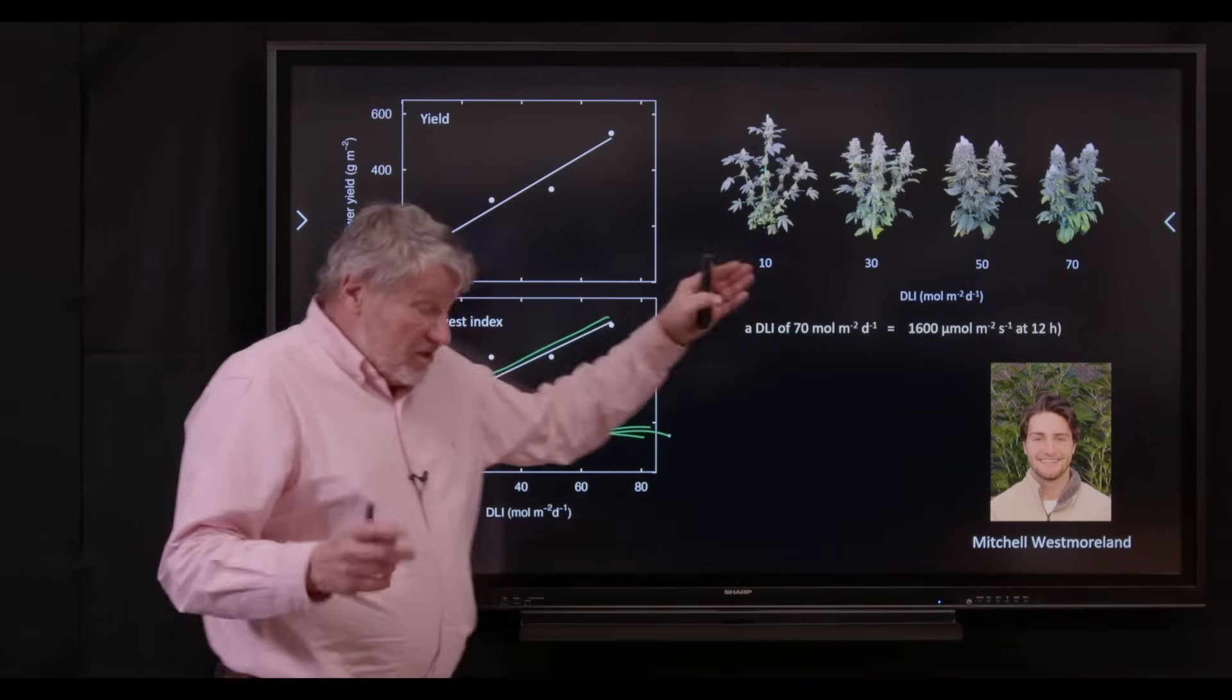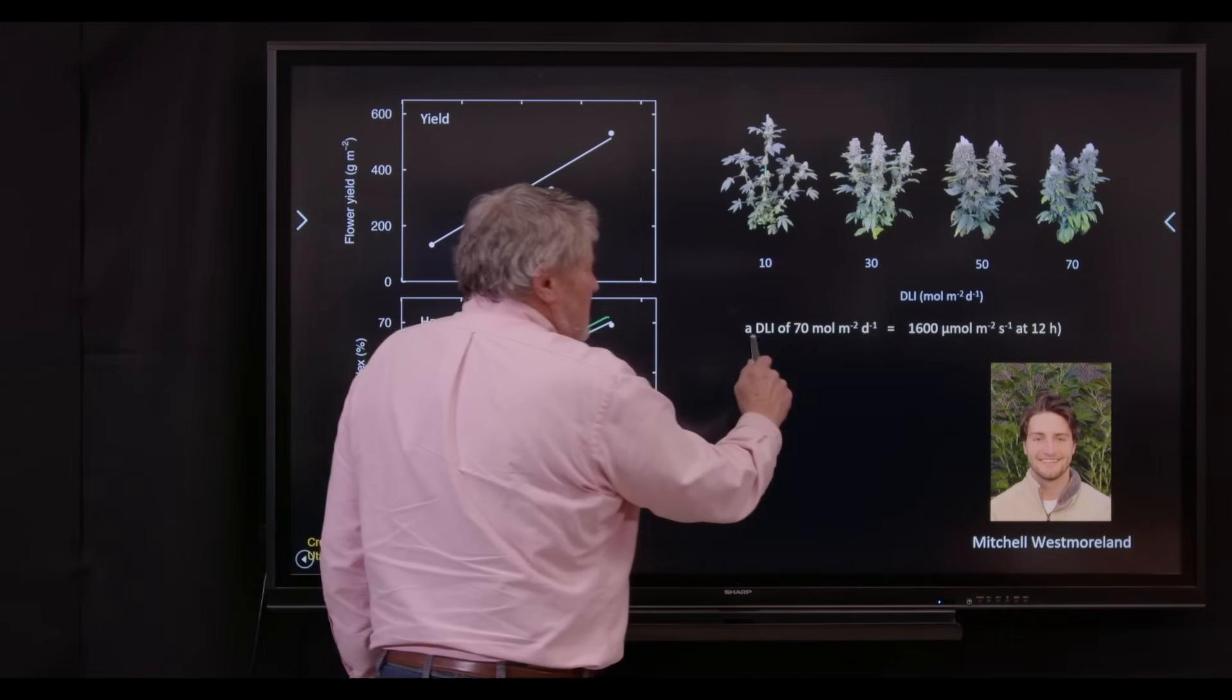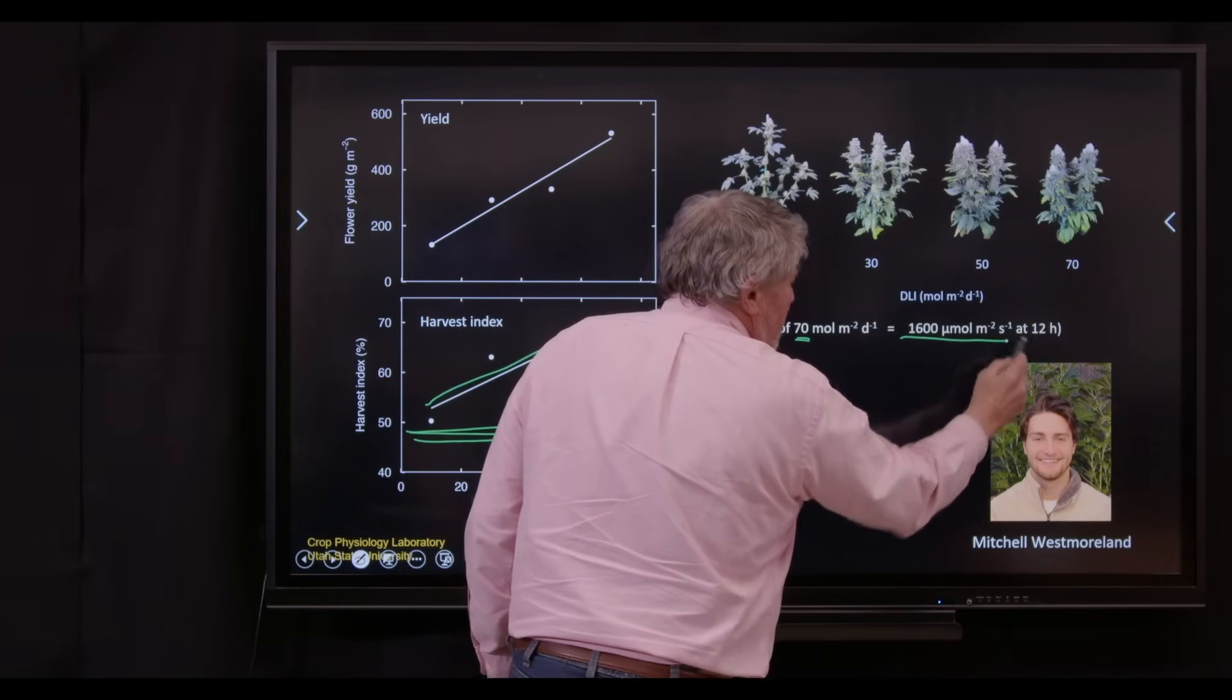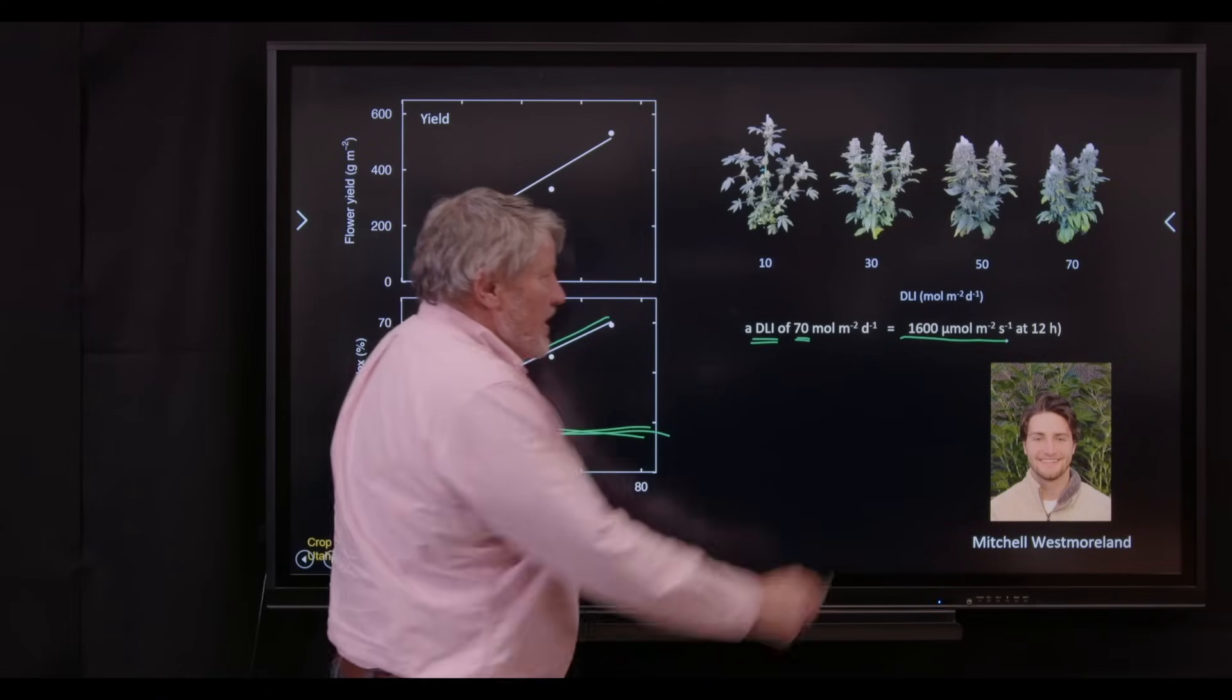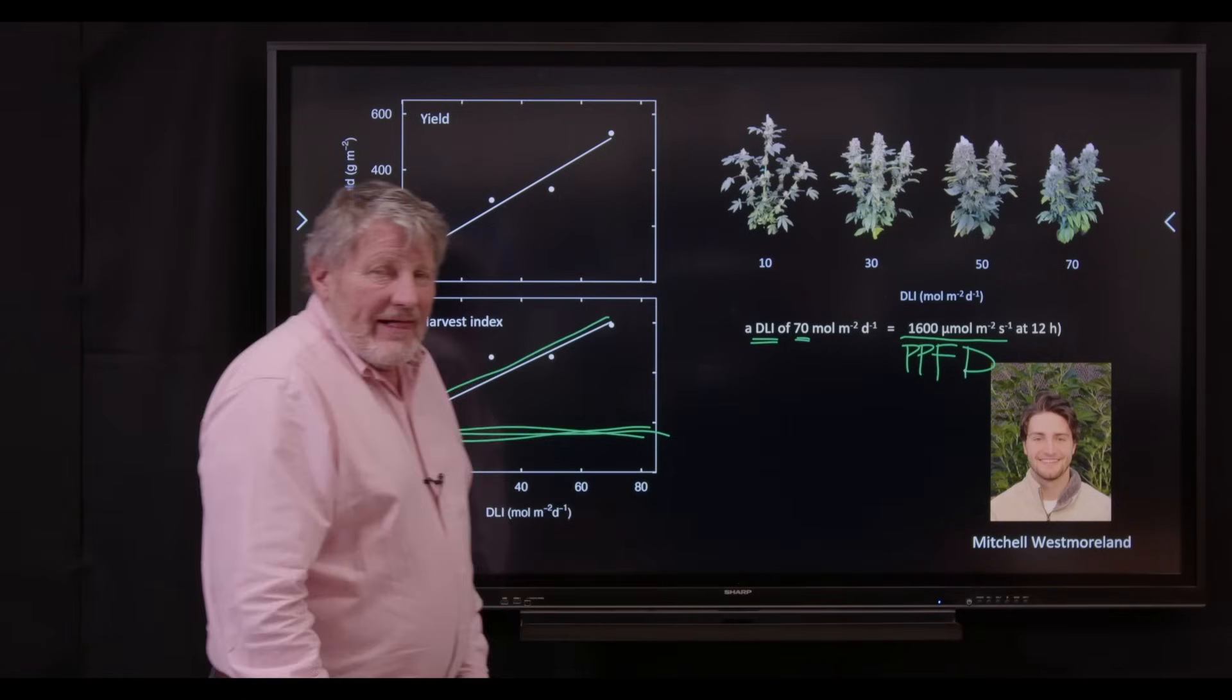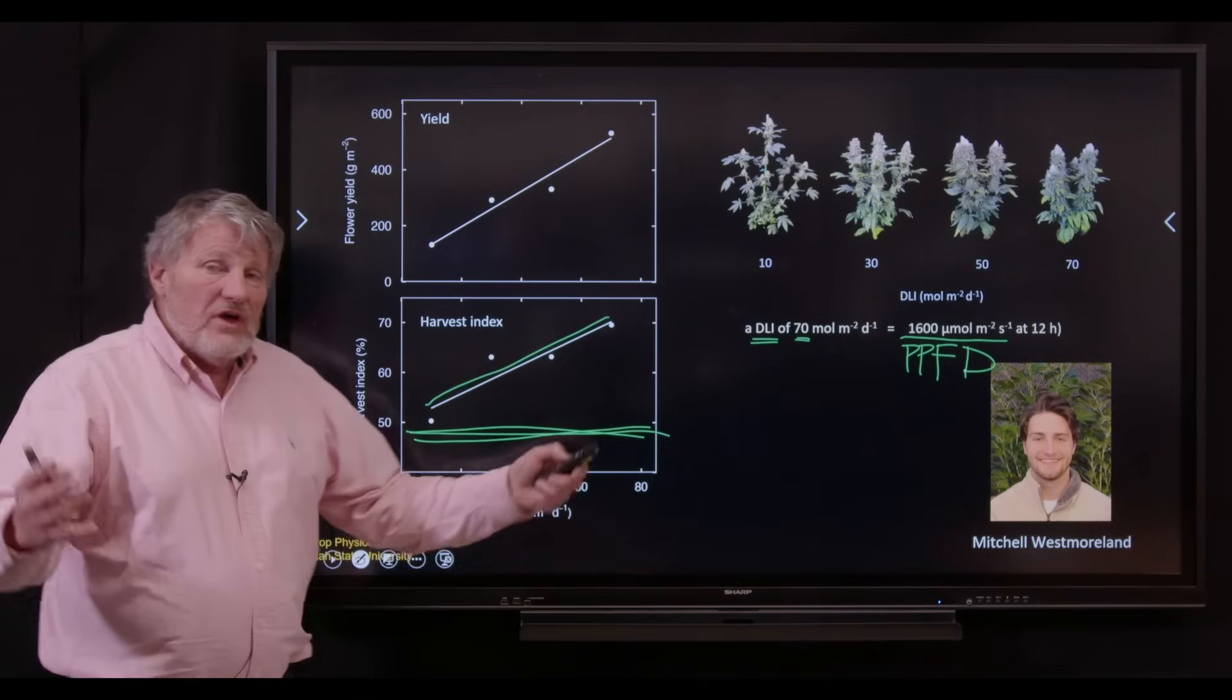This is work done by Mitch Westmoreland, who is a current PhD student in the lab. If you are measuring lights, a daily light integral of 70 would be 1,600 micromoles per meter squared per second at a 12-hour photo period. This number right here we call the PPFD, photosynthetic photon flux density. This is what we measure. That's amazing. That's 80% of full sunlight the whole time when these plants are in here. This is just stunning. No other crop is like this, at least none that we have studied.